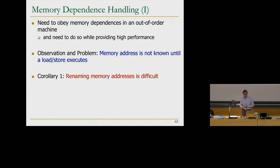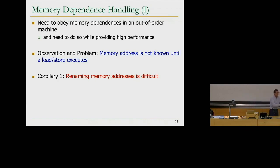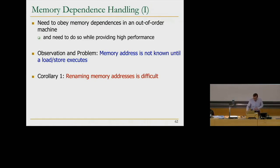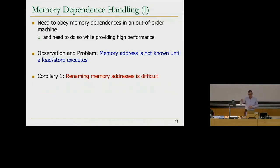The key observation is that the memory address is not known until a load or store instruction executes. The first corollary is that renaming memory addresses is difficult because of this — you cannot do it at the decode stage. If you really want to do renaming, you need to do it after execution, but that's too late because instructions are already out of order. The beauty of renaming was that it happens in-order, so it can link the producer to the consumer correctly. Here, it's a mess.